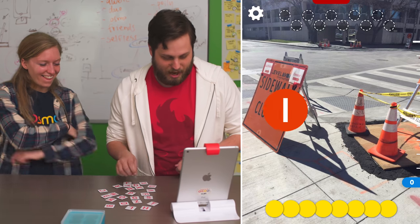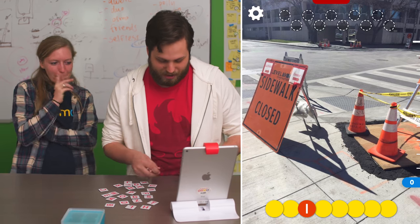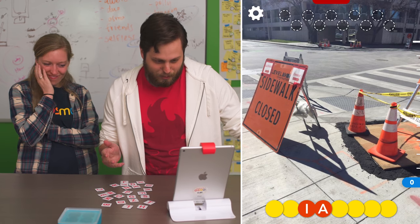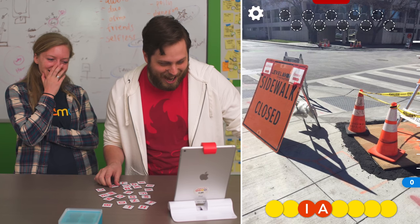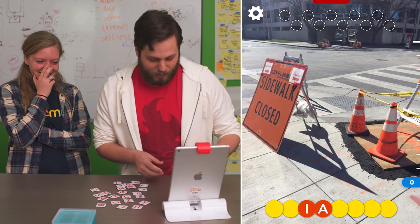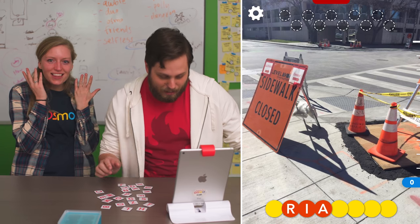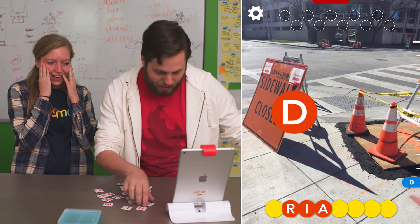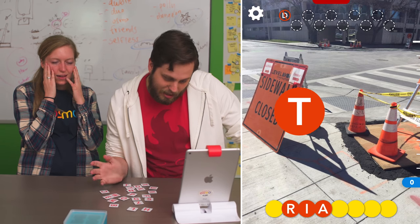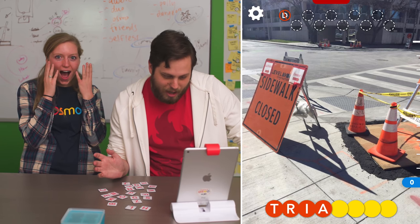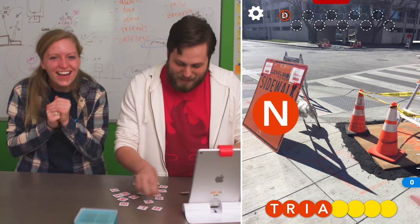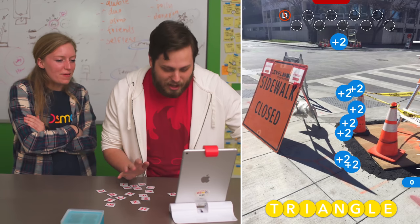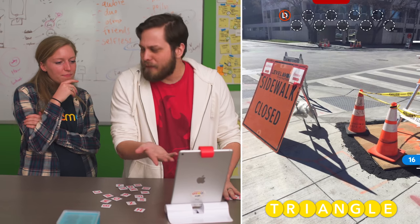We're going to try it — get some vowels out. I got an I... I got an A. I-A. I'm going to go with an R, see if an R is in there. Bam! I'm doing good. I'm going to start throwing out a D. Triangle? It's a triangle! Oh my gosh — you're tripping me out with shapes! You threw a shape in there. Fine — a traffic cone. A minute fifty.